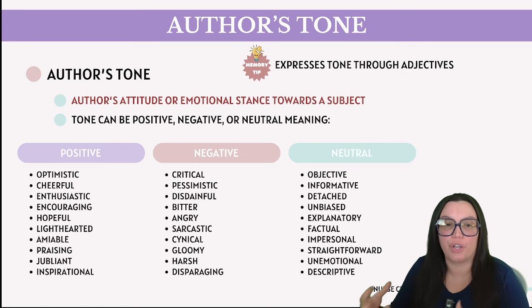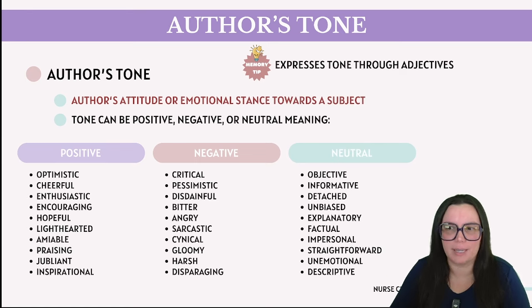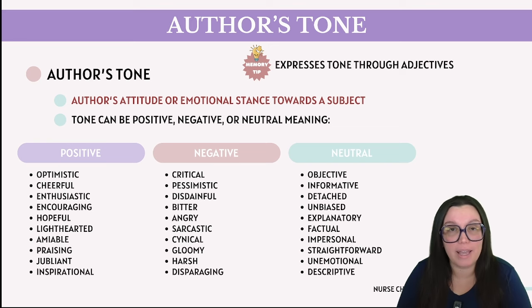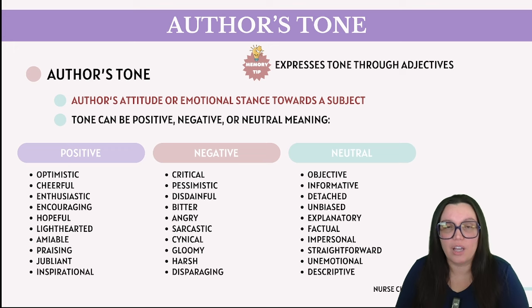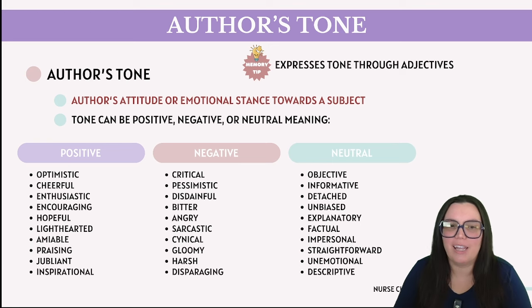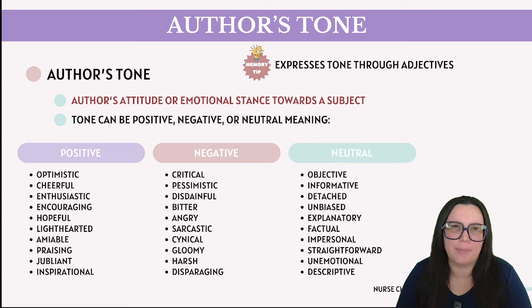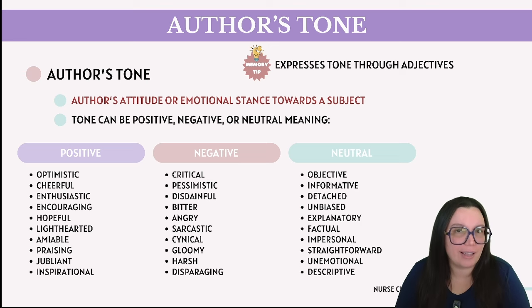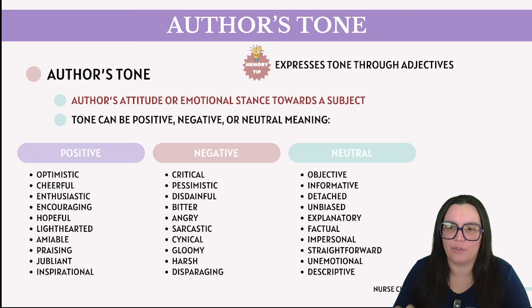Next, let's talk about author's tone — basically the author's attitude towards the subject, expressed through different adjectives. Tone can be judgmental, biased, emotional, positive, negative, or neutral. Positive tone words include: optimistic, cheerful, enthusiastic, encouraging. Negative tone words include: critical, pessimistic, disdain, bitter, angry. Neutral tone words include: objective, informative, detached, unbiased — a very neutral playing ground when it comes to the author's tone.